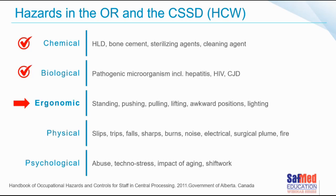When it comes to chemical hazards, examples include things like high-level disinfectants, sterilizing agents, and even cleaning agents. Biological hazards include pathogenic microorganisms, which we are exposed to every day in almost everything we do in the field. Ergonomic issues relate to standing, pushing, pulling, lifting, being in awkward positions, and bad lighting. Physical hazards include slips, trips, falls, sharps, burns, noise, electrical issues, surgical plume, and fire. And there are also psychological hazards, including abuse, techno-stress, impact of ageing, and shift work — all potential hazards for those working in this environment.